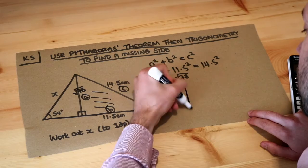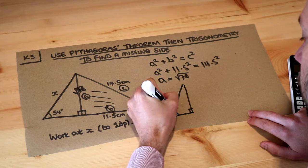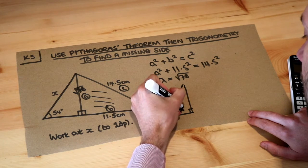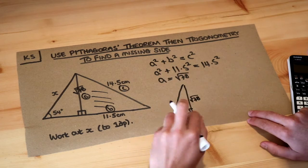Now we've got enough information to work out what x is. If I draw this triangle on the left separately, we've got this angle of 54 degrees here, we've got the √78 here, and we've got the x over here.